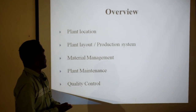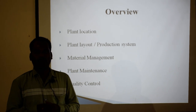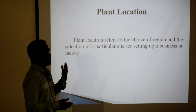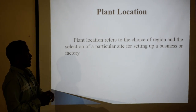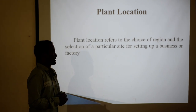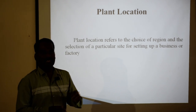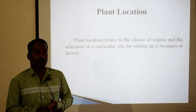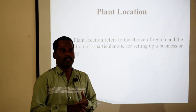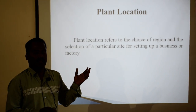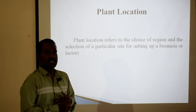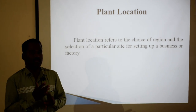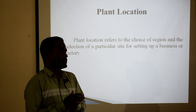Number one: plant location. Plant location is nothing but where our plant is located. It refers to the choice of region and the selection of a particular site for setting up a business or factory. For this selection, we must consider whether we are going to install our plant in a rural area, semi-urban area, or urban area. There are factors to be considered, such as nearness to the market, availability of raw material, and government policies and procedures.